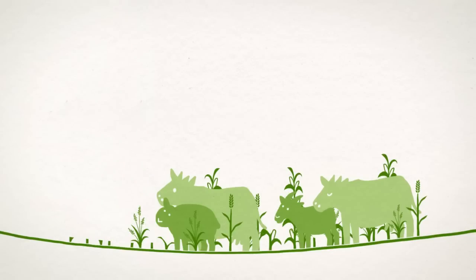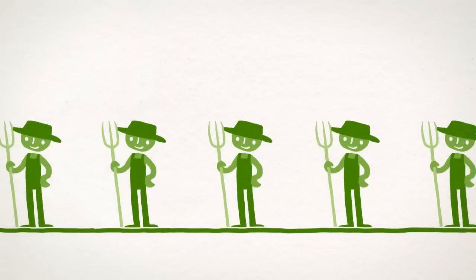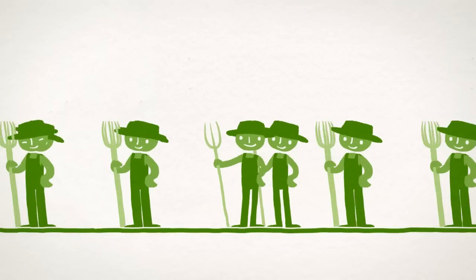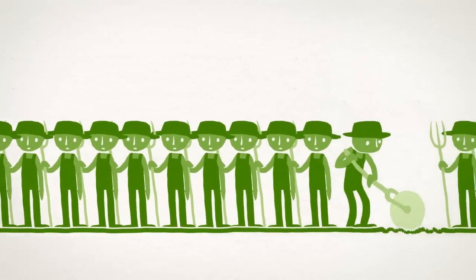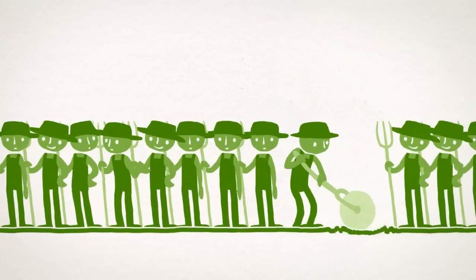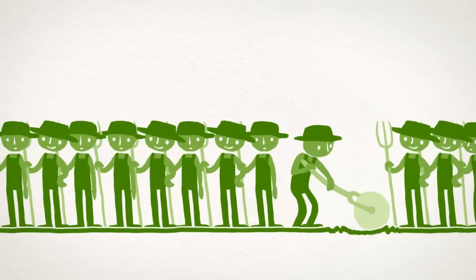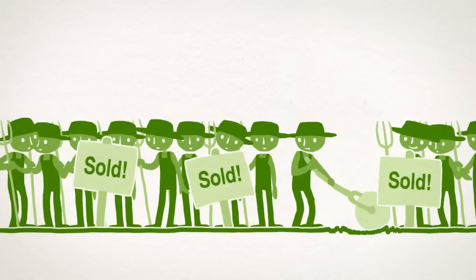Productive land is becoming scarce. In 1960, there was still almost half a hectare of farmland for every person on Earth. In 2020, there will be only around a third of that left. Consequently, even unsuitable land is being turned into farmland. No wonder land grabbing is on the rise.